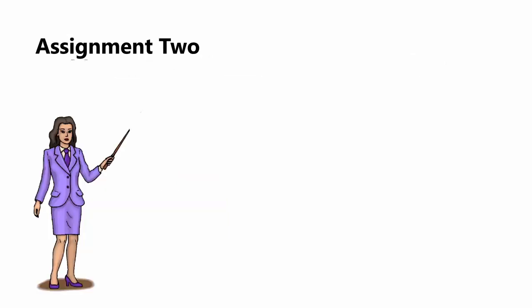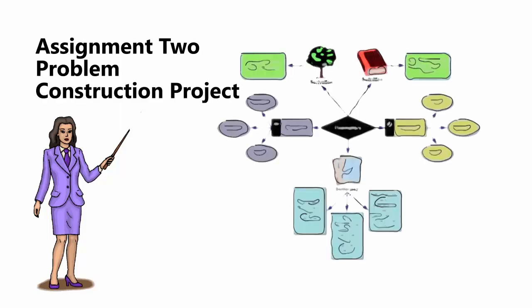The second assignment will help you learn and practice problem construction. Using Graphic Organizer software, you will create a map of a problem that you will use in a lesson plan. This lesson plan will be part of Assignment 3. The map you create will deconstruct the problem into the core principles and relevant learning goals and objectives, and will identify the standards associated with them. As part of the assignment, you will use a 3C-3R model in your problem construction. You will have the opportunity to earn 5 points with the second assignment.